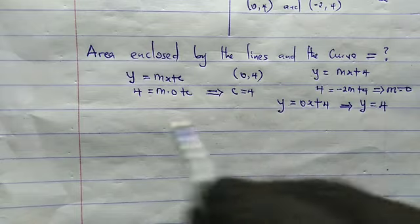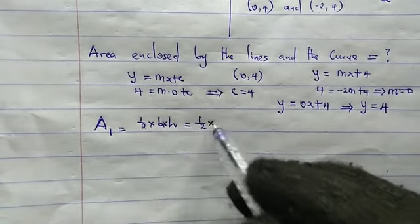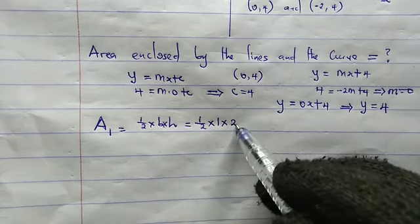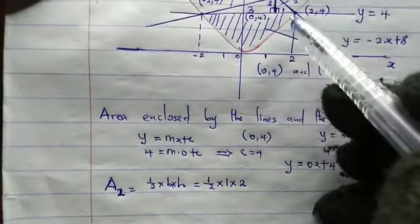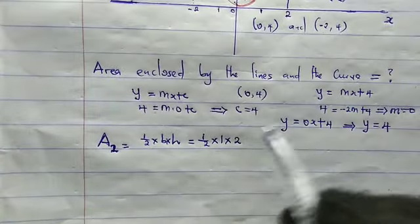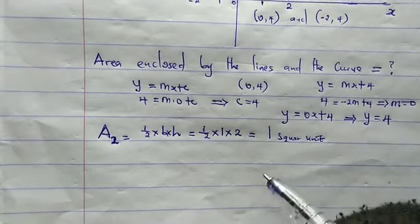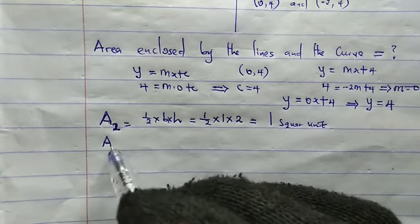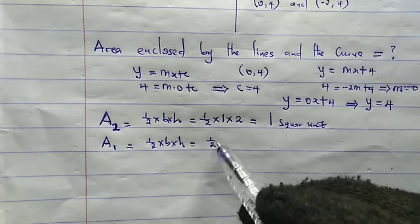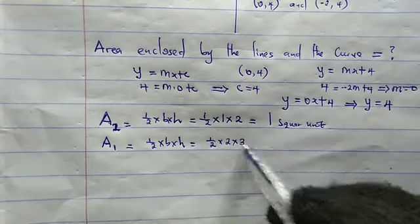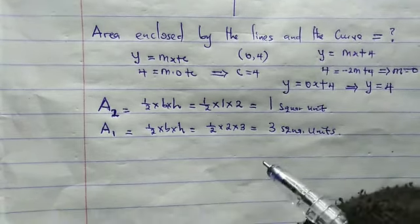For Area 2: area = ½ × base × height = ½ × 1 × 2 = 1 square unit. For Area 1: area = ½ × base × height = ½ × 2 × 3 = 3 square units.